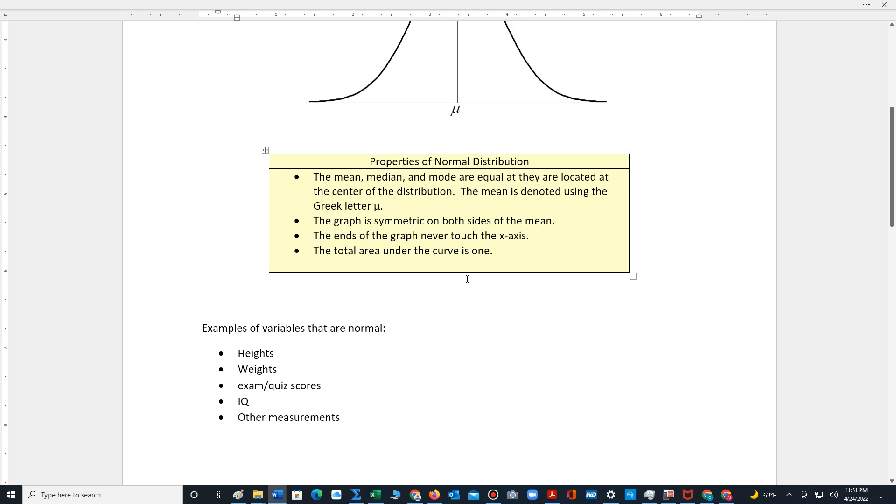Examples of variables that are normally distributed include heights, weights, exam or quiz scores, IQ, and other types of measurements.